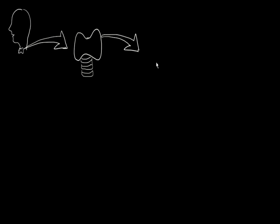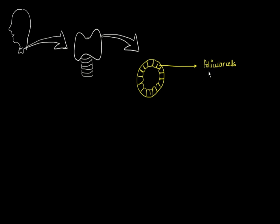If you zoom into this thyroid gland, it is made up of lobules. These follicles are formed by cuboidal cells which line together and enclose a cavity that is filled with colloid. These are the follicular cells, also called the principal cells. Inside the cavity is filled by colloid, and this whole structure together is called the follicle.